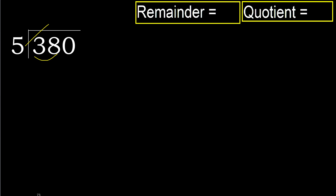5 — multiply by which number is nearest to 38 but not greater. 5 multiplied by 8 is 40; 40 is greater. 5 multiplied by 7 is 35; 35 is not greater.